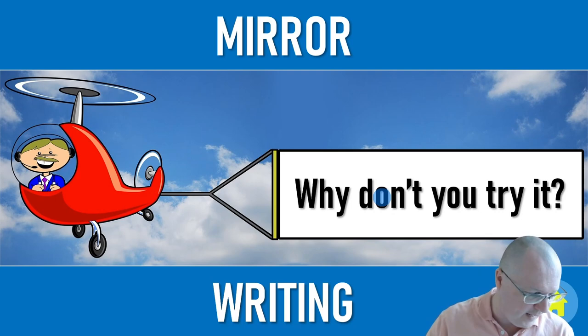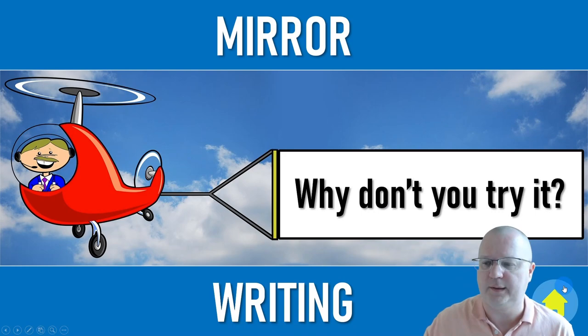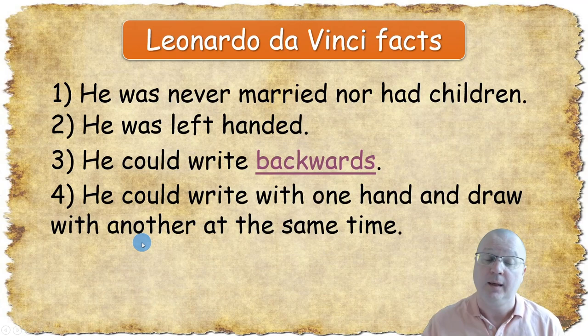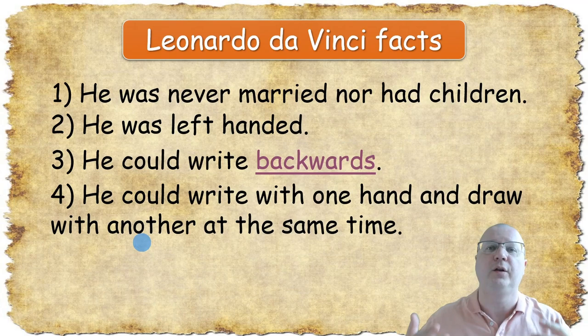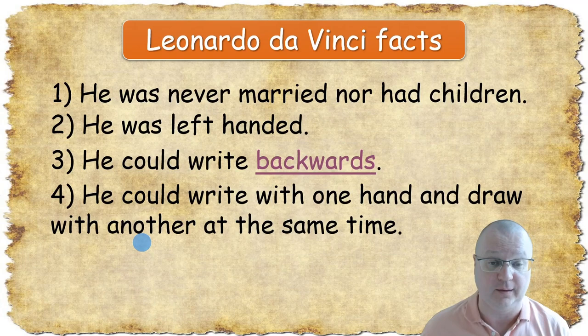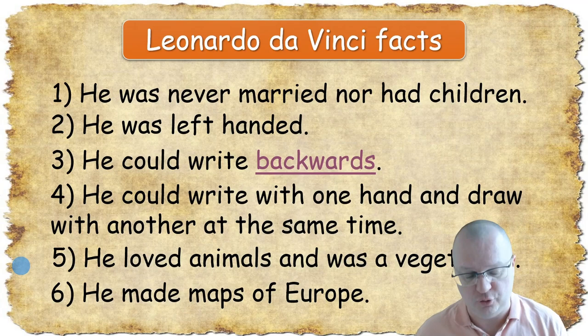Click the home button to go back and show the next fact: Leonardo could write with one hand and draw with another at the same time. Invite a couple of students to try it on the board — for example, write the word 'apple' and draw a triangle. It's a lot of fun and they understand how difficult it is. Fact five: he loved animals and was a vegetarian. Fact six: he made maps of Europe.